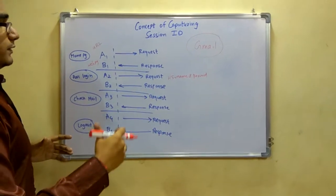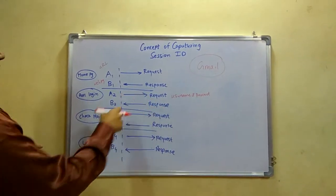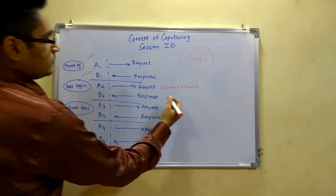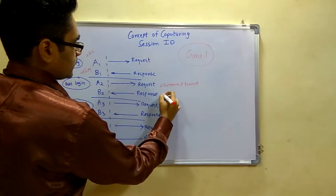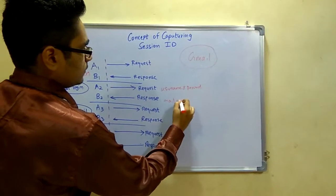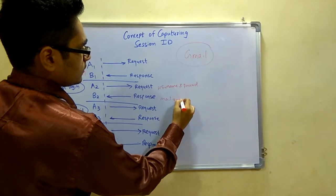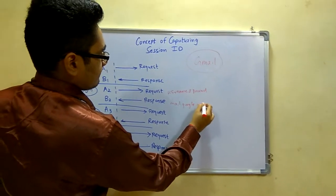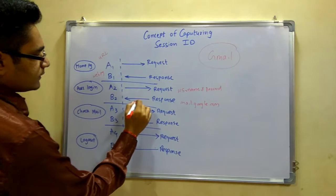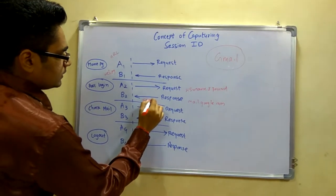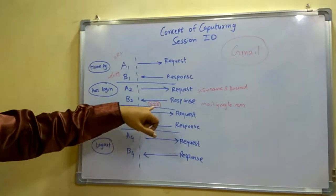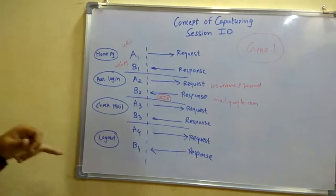The server authenticates whether you are the legitimate user or not. In the response you will be redirected to the Gmail site — that is mail.google.com. In this response you will be getting one session ID, which I am writing here as SID. SID stands for session ID.